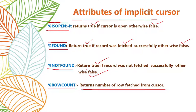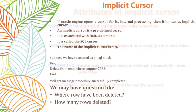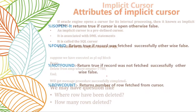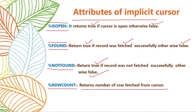The %NOTFOUND attribute is the reverse of %FOUND. If records are fetched inside the cursor, %NOTFOUND returns FALSE; otherwise it returns TRUE. The %ROWCOUNT attribute returns the number of rows fetched from the cursor. For example, if we deleted a record for employee 7788, one record is deleted — but there is no confirmation. For such cases we can use %ROWCOUNT, which tells how many records were deleted.